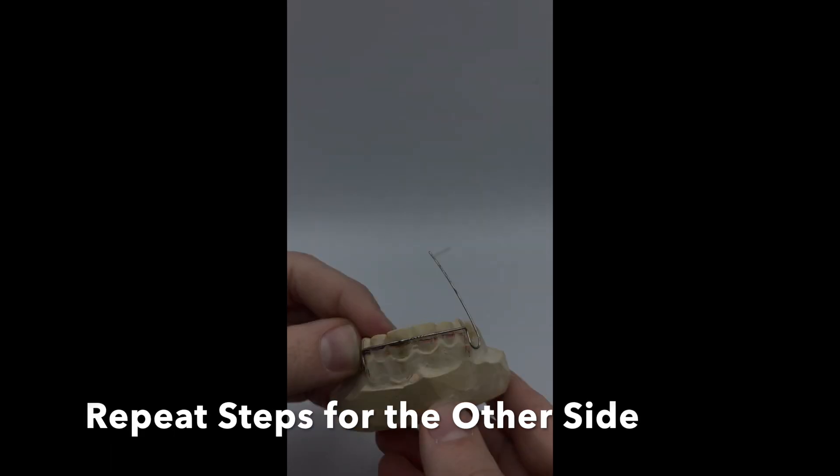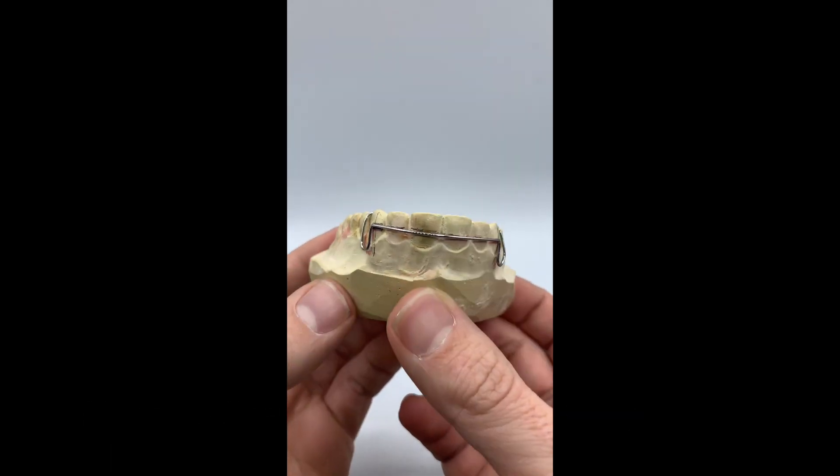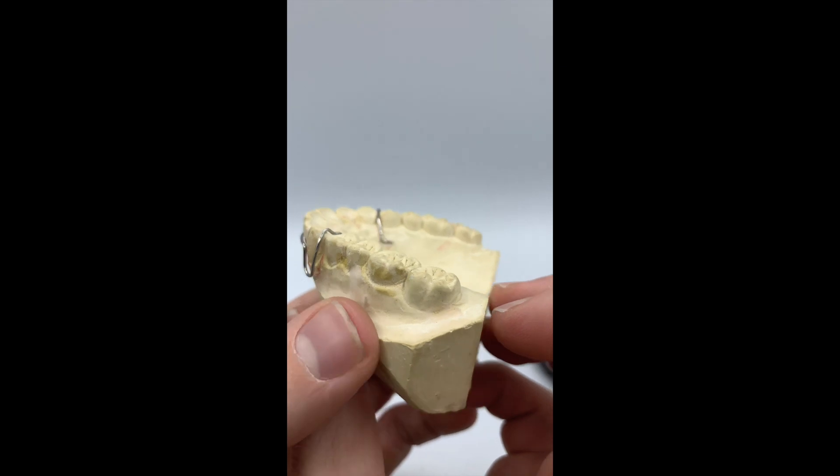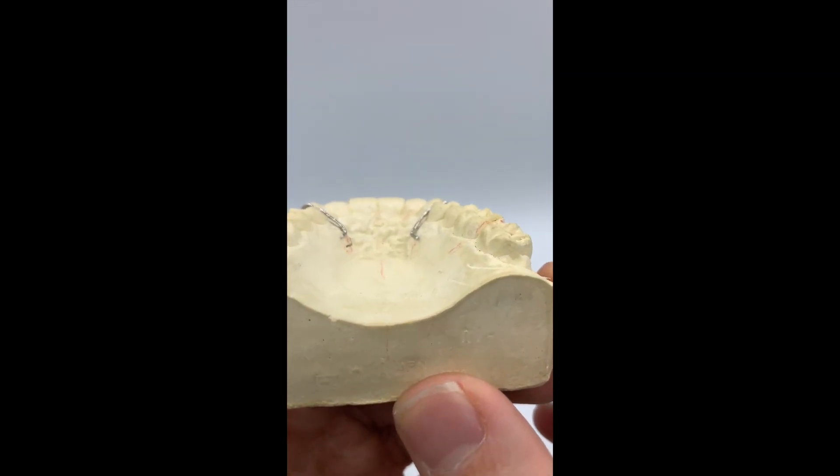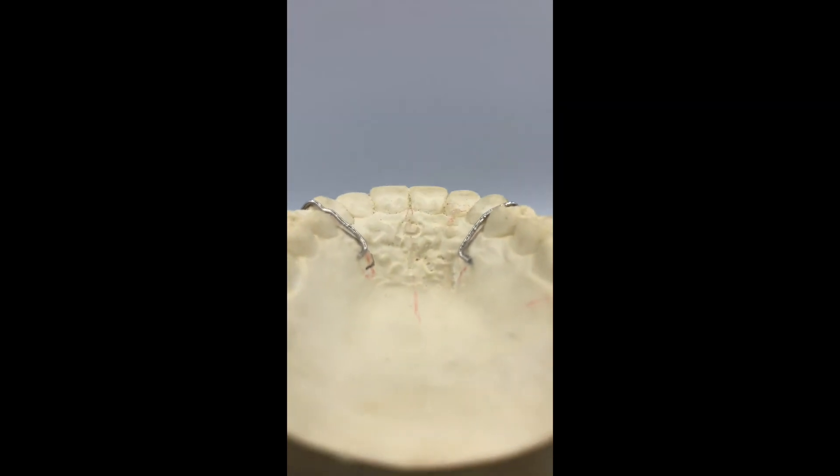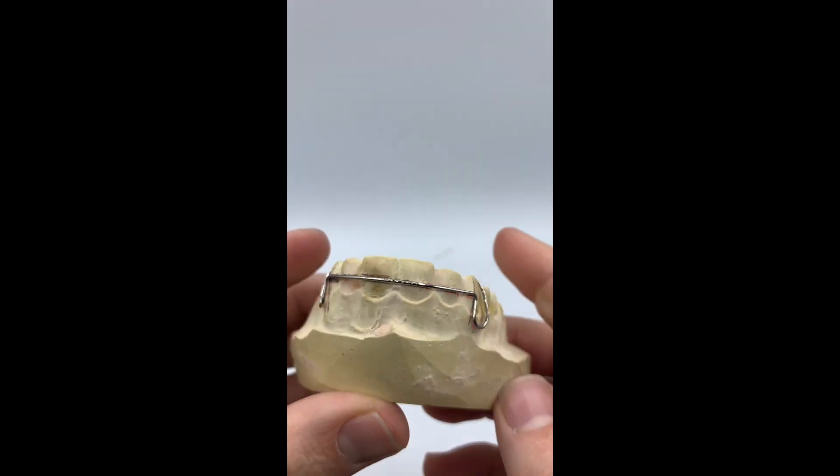Repeat the steps for the other side. Always looking back to the beginning, making sure your wire is straight and touching all teeth. A Hawley bow should fit passively with no pressure on any teeth.